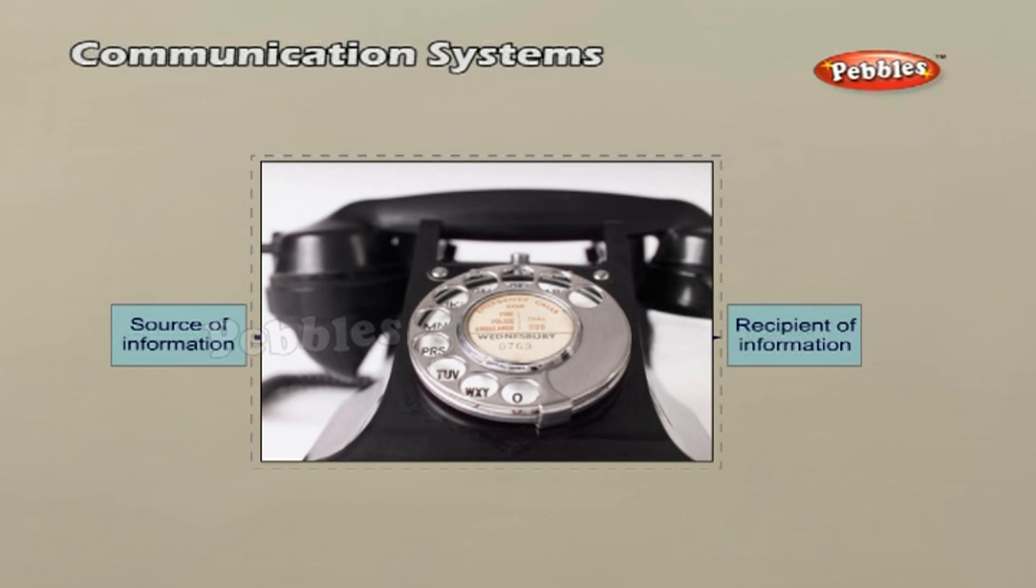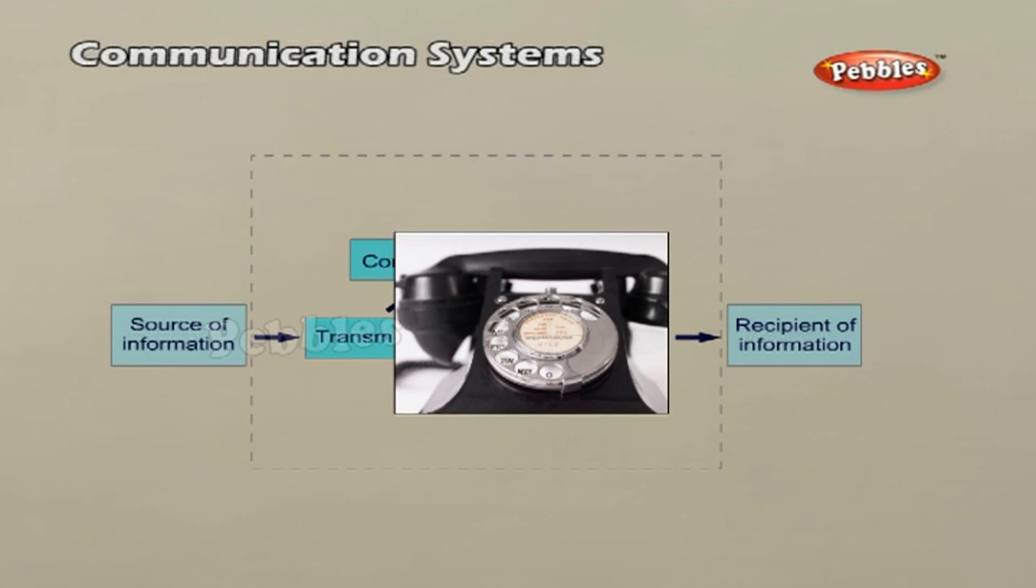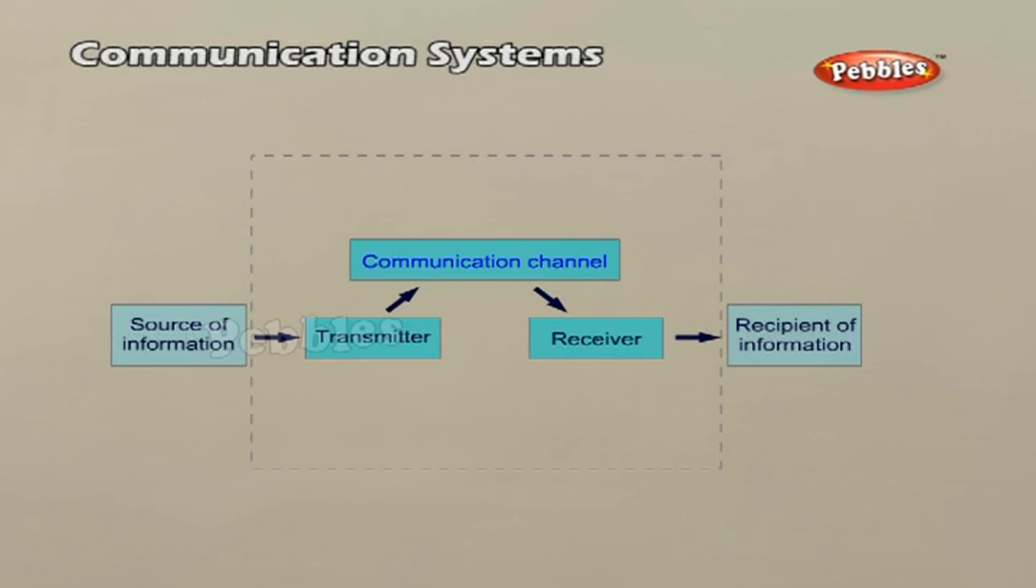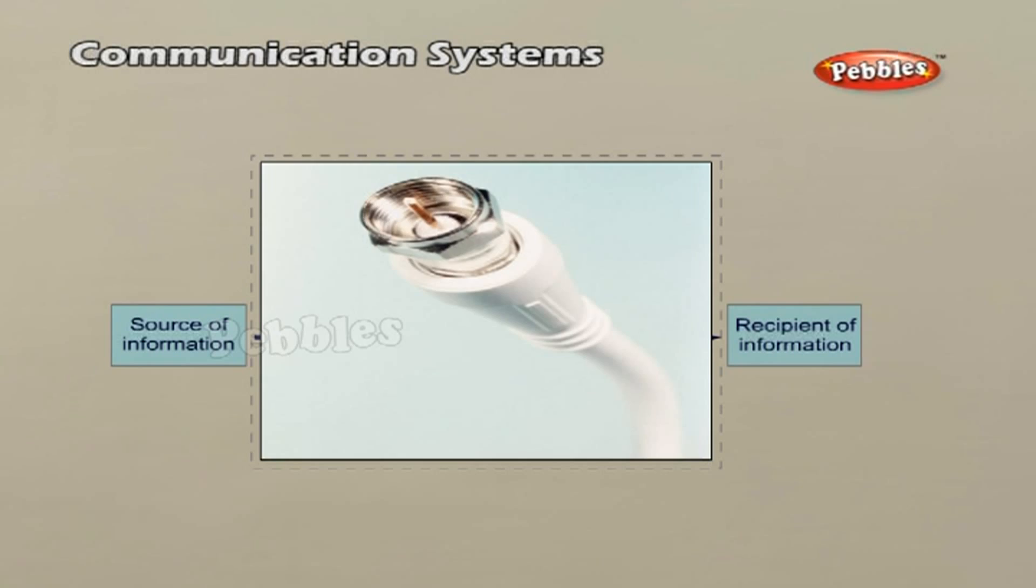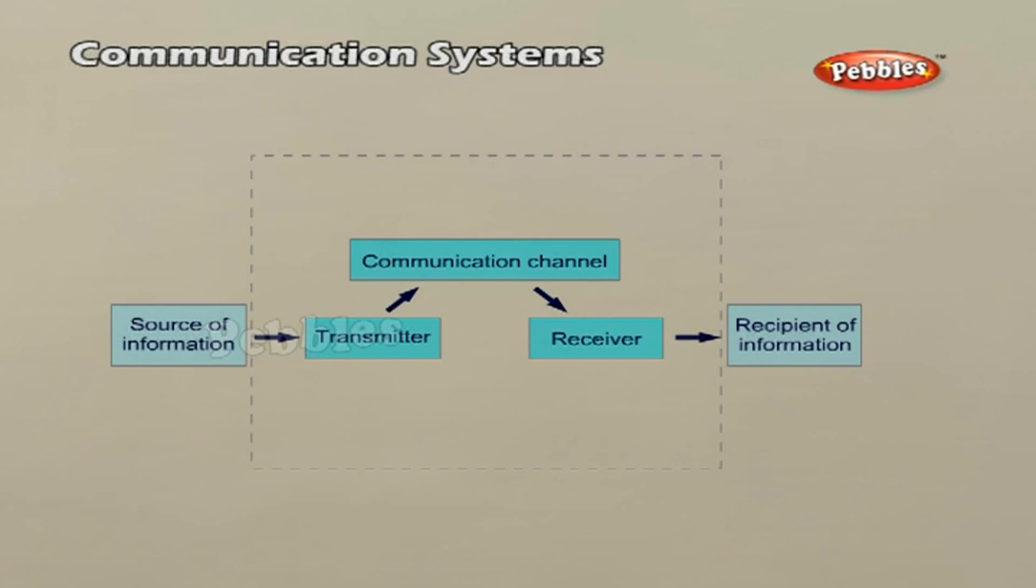Television broadcast, microwave links and satellite communications are some examples of communication systems that use space wave mode of propagation. The figure summarizes the various modes of wave propagation discussed so far.